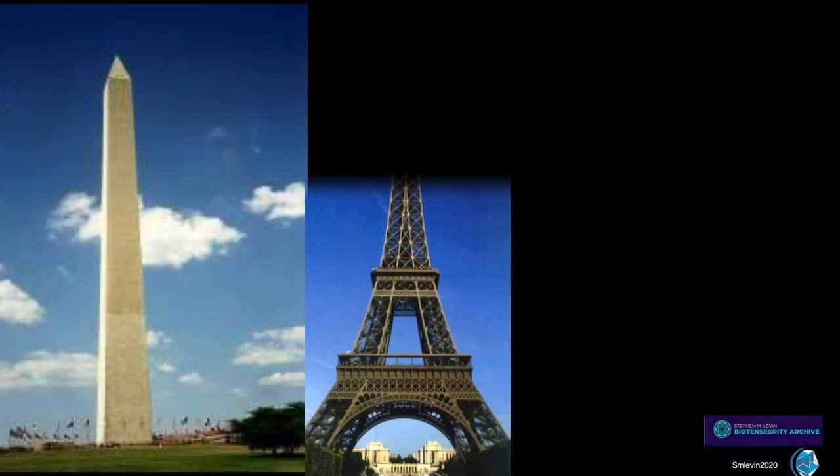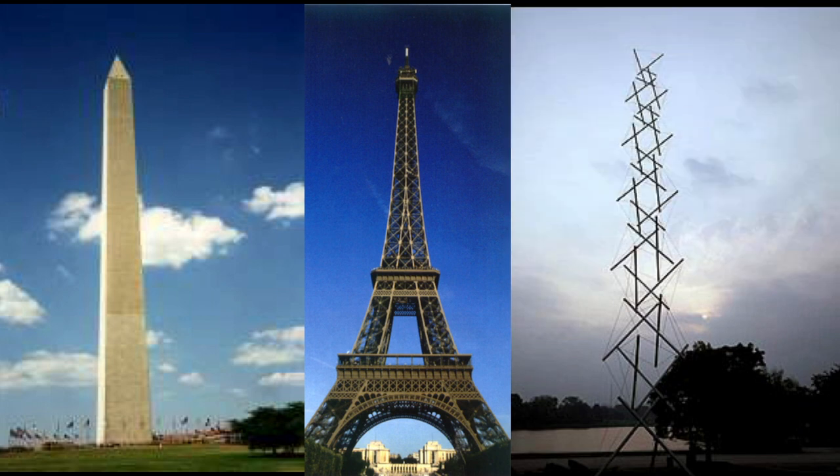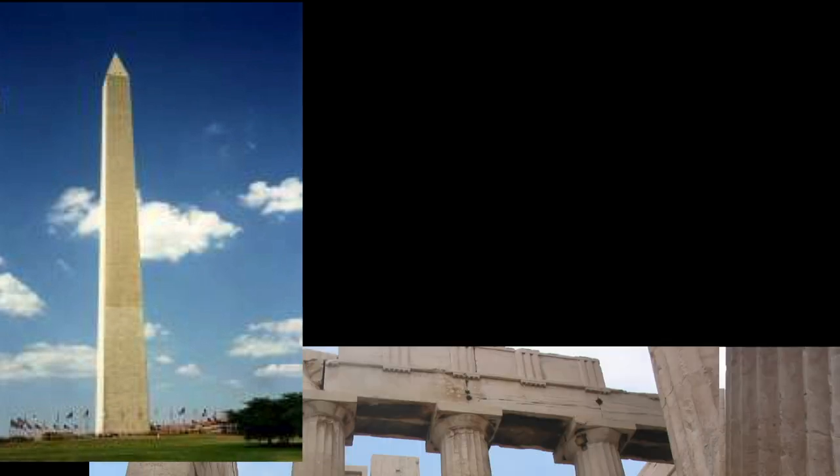To make any sense of this, let's talk about three columns. The Washington Monument, the Eiffel Tower, and Snelson's Tensegrity Tower. Let's start with the Washington Monument, which is 169 meters tall, it's 10.5 meters thick walls at the base, and 1.5 meter thick walls at the top, and weighs an astonishing 74,600 metric tons.